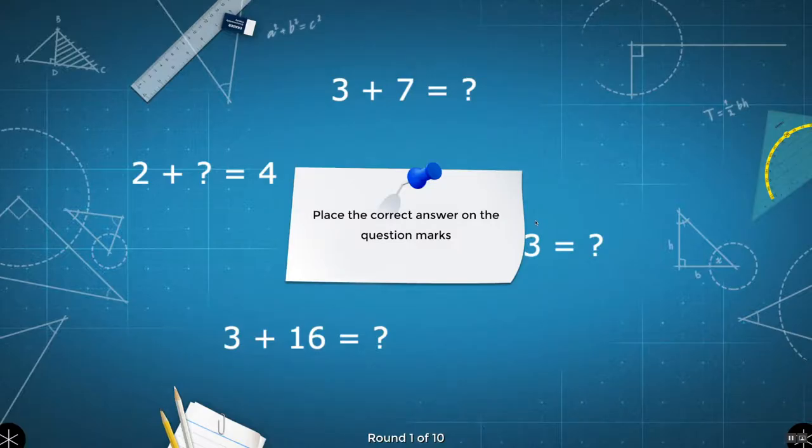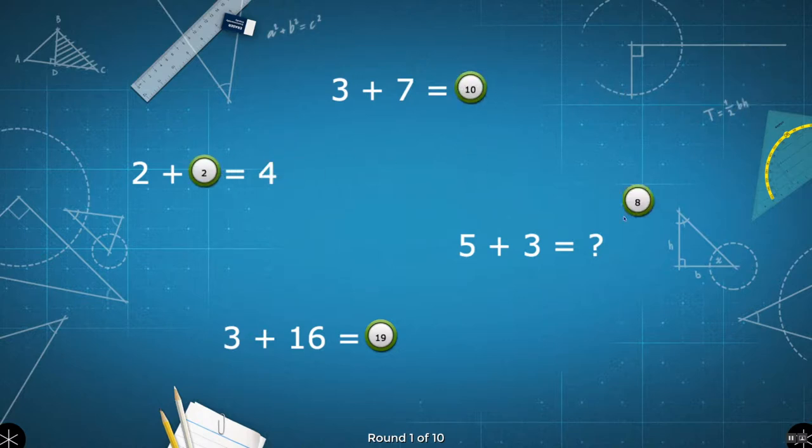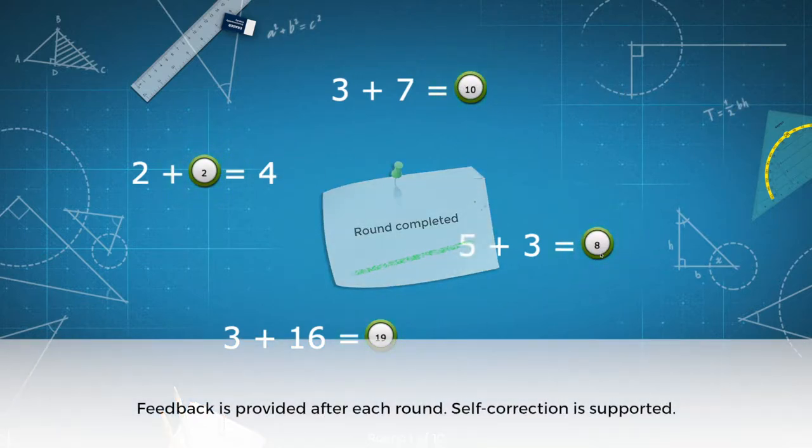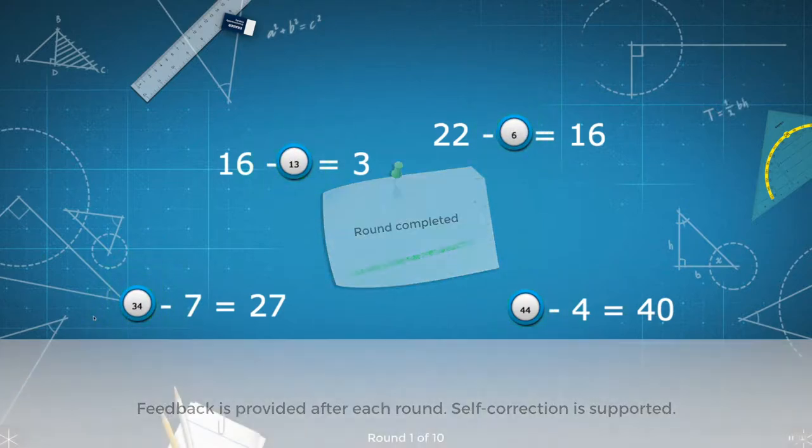Students drag numbered items to the correct spots to complete equations. There are 10 rounds for each of these apps. After a round is completed, feedback is provided. Correct items will give off a green glow, and incorrect items will glow red. The students have the opportunity to self-correct.